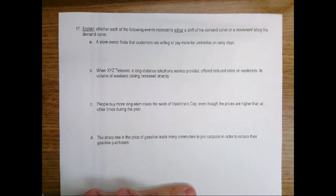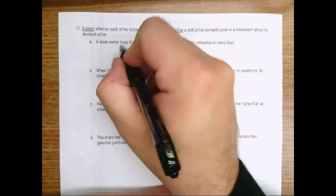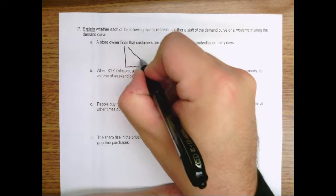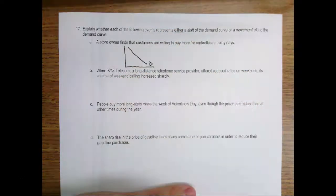Or put a different way, they want to buy more umbrellas at every price than they did before. And so visually it would look something like this. We could draw out the original demand curve and would say they're willing to pay more than before.